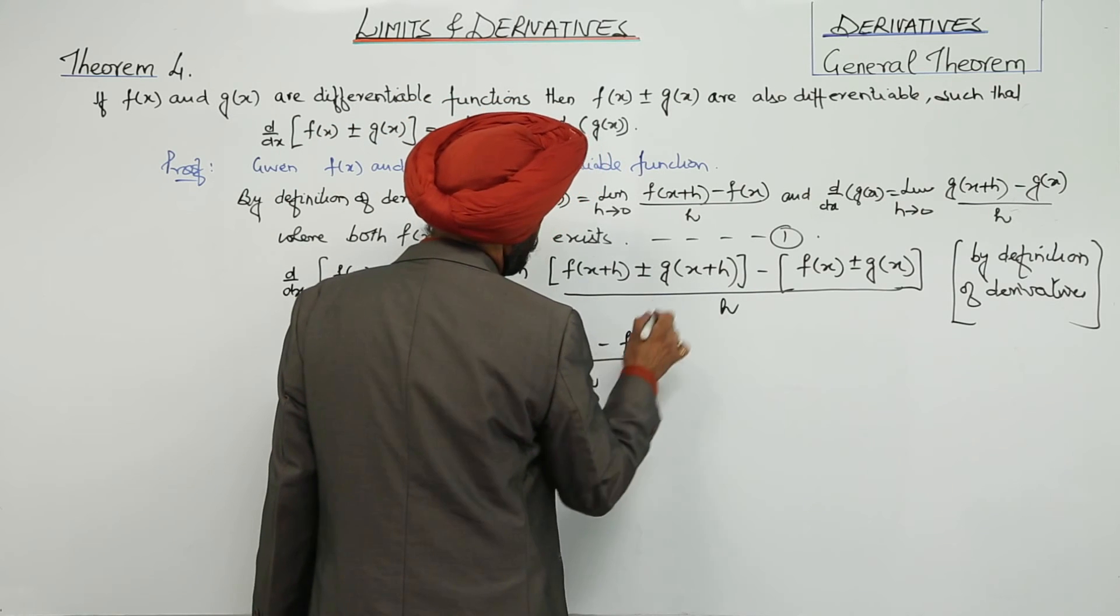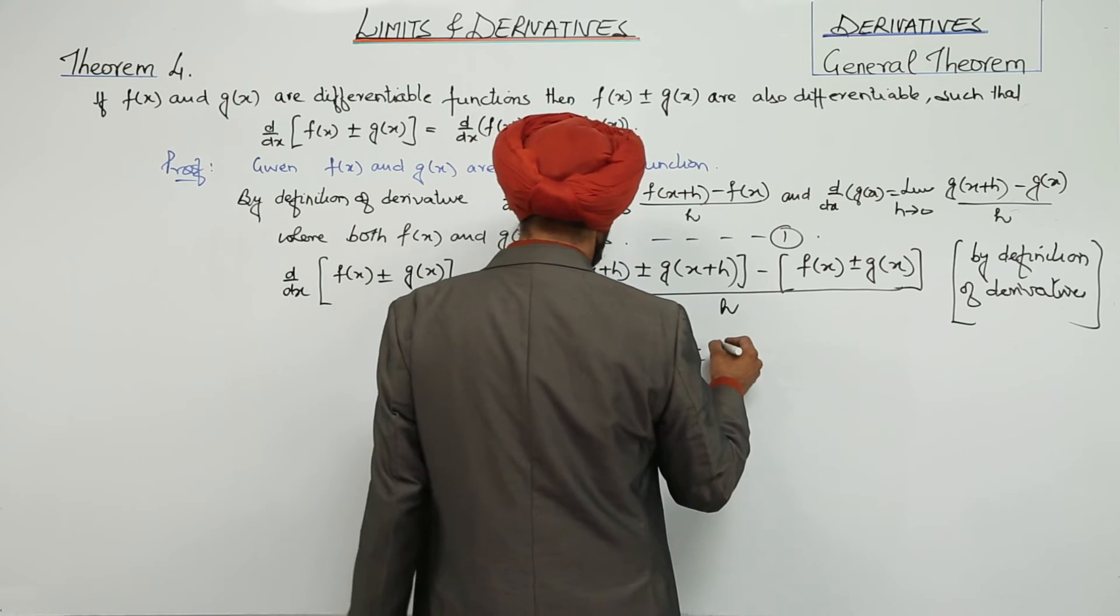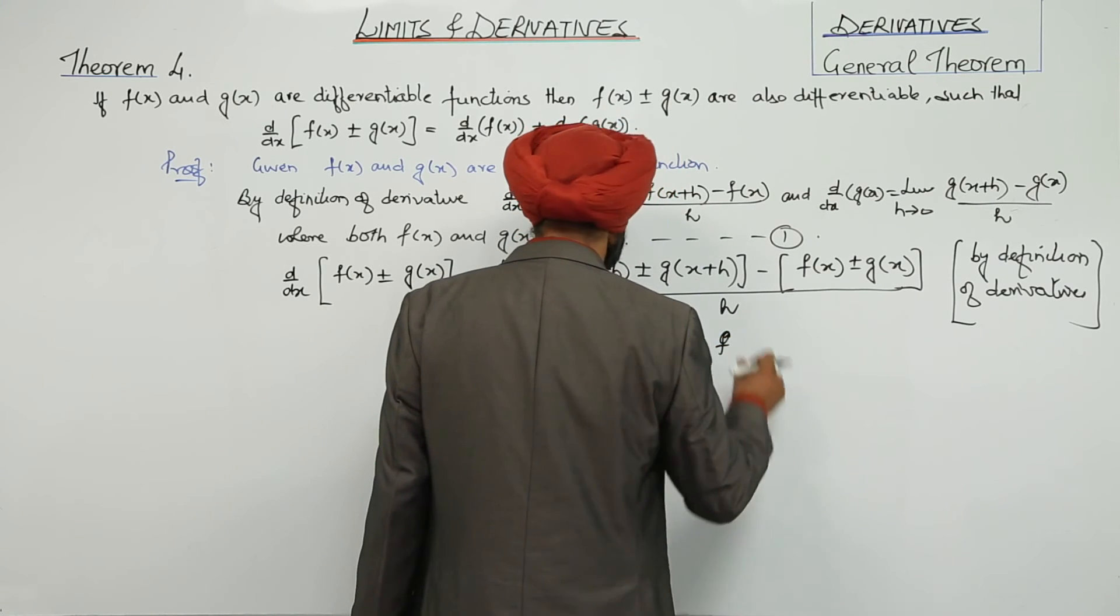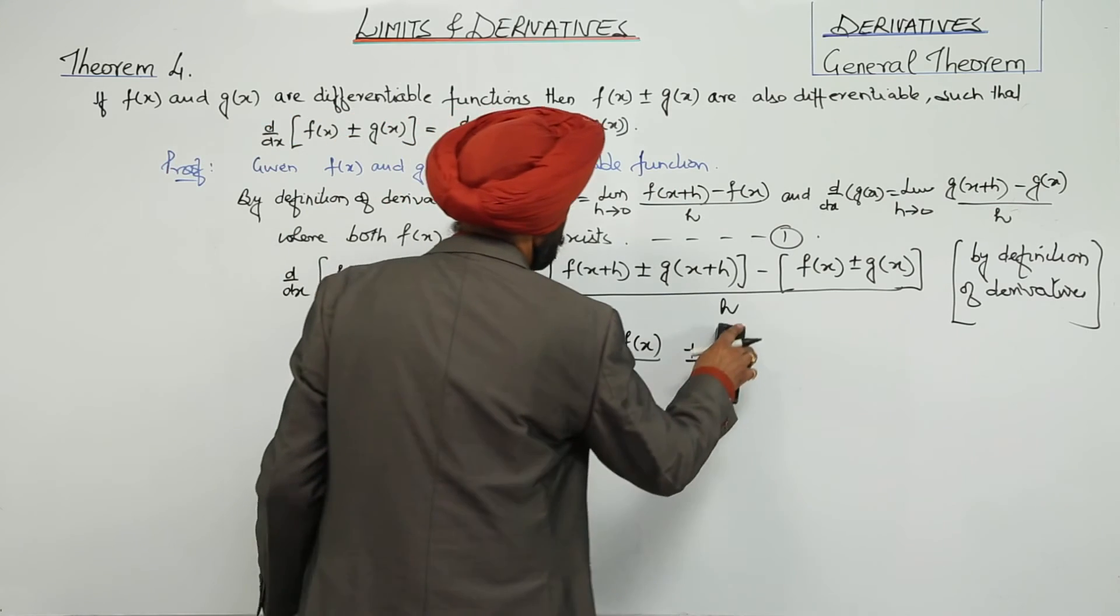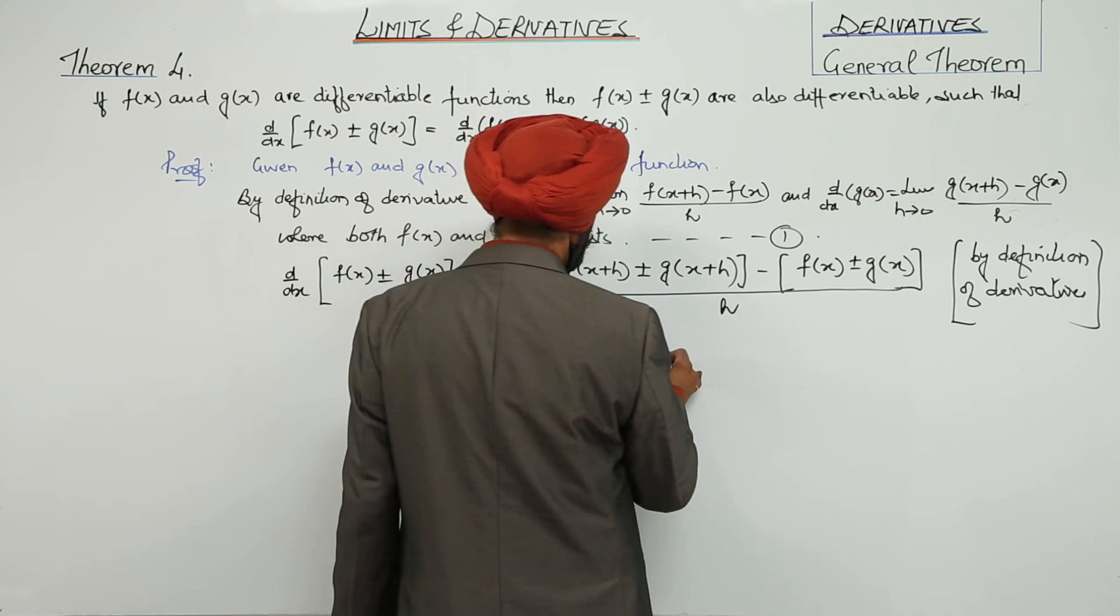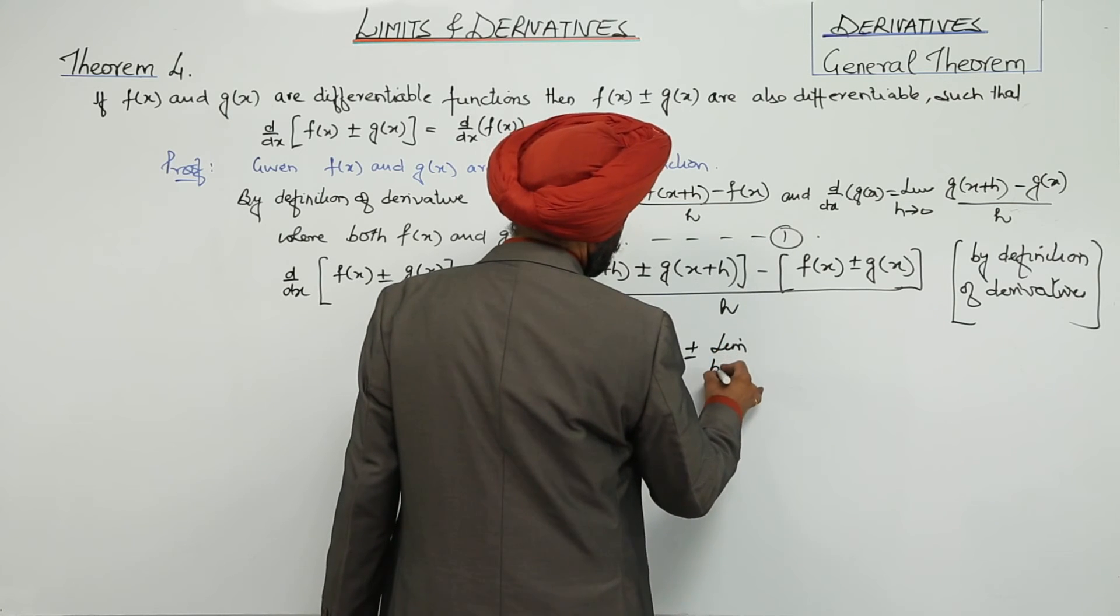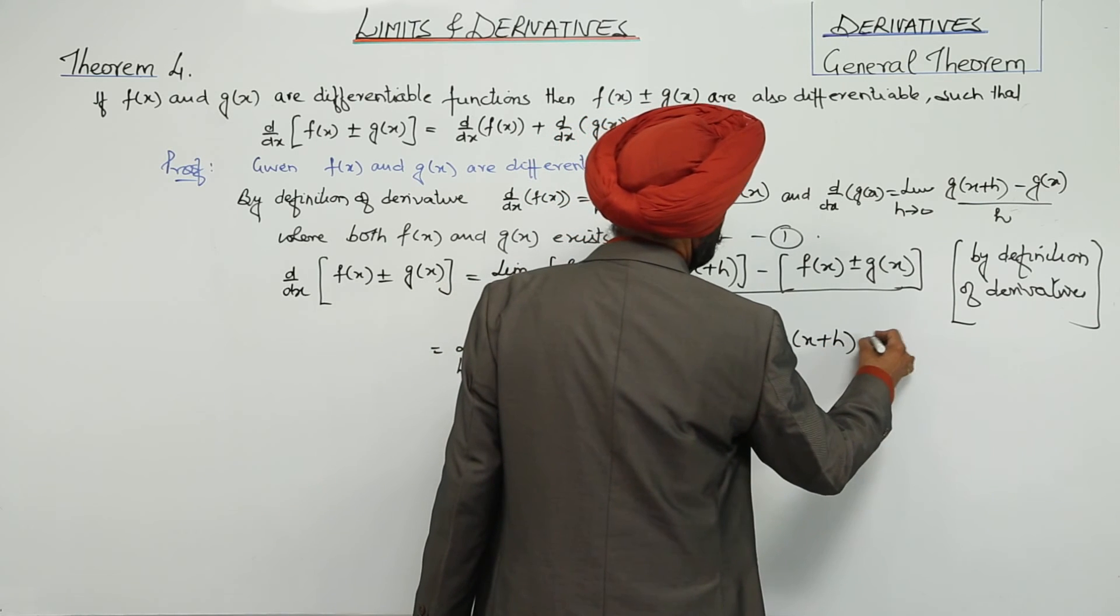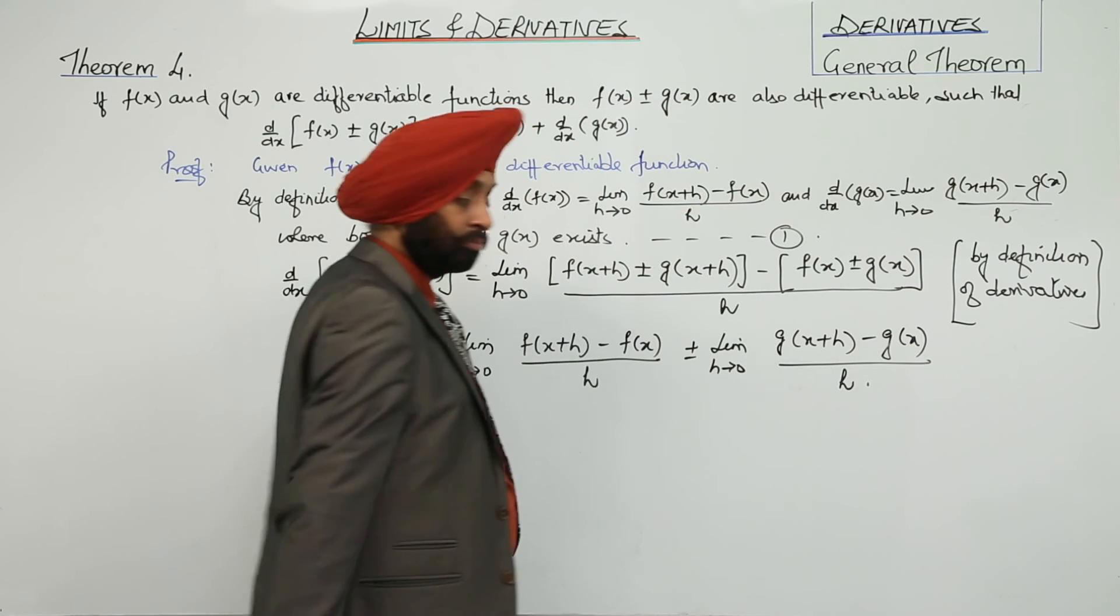Here it will be negative, and here plus or minus. Plus or minus limit as h approaches 0 of [g(x+h) - g(x)]/h.